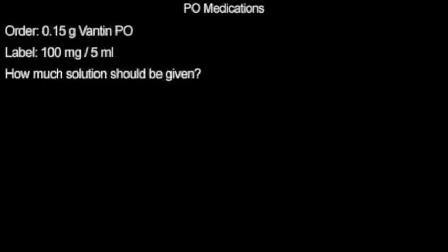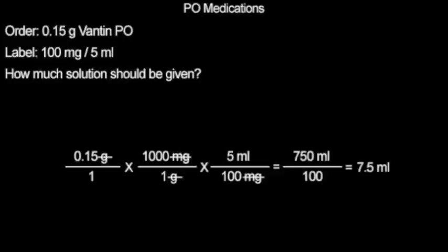Pause the video, try this problem on your own, and continue when you are ready for the answer. 0.15 grams of Vantin by mouth at 100 milligrams per 5 milliliters comes out to being 7.5 milliliters per dose. It should be noted that this problem did require a conversion between grams and milligrams.